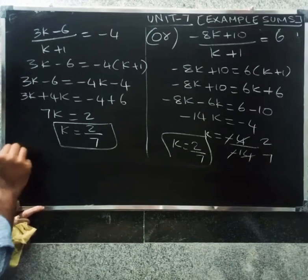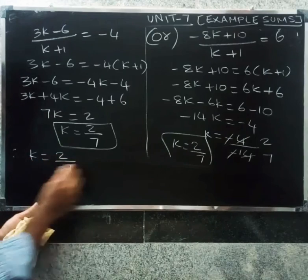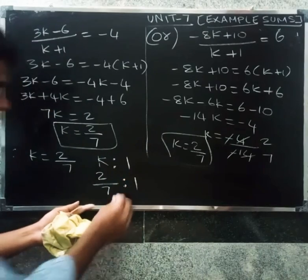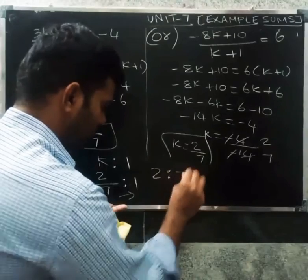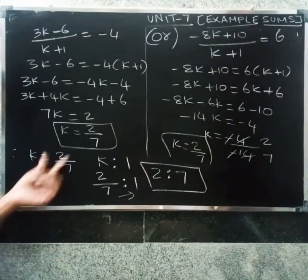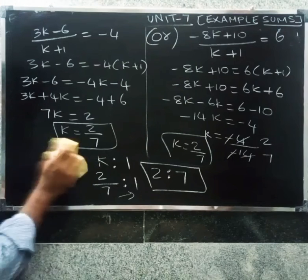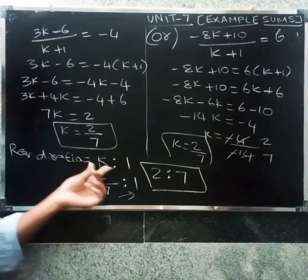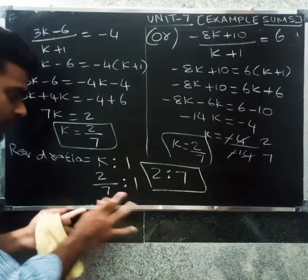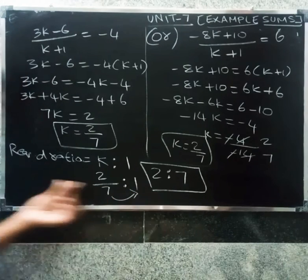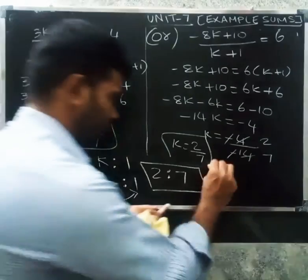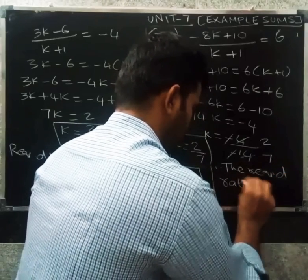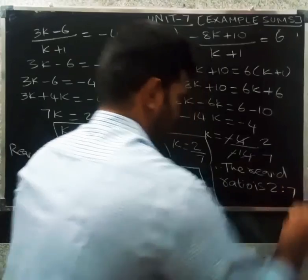So k = 2/7. Since the ratio is k:1, the required ratio is 2/7 : 1, which simplifies to 2:7. Therefore, the required ratio is 2 is to 7. Thank you.